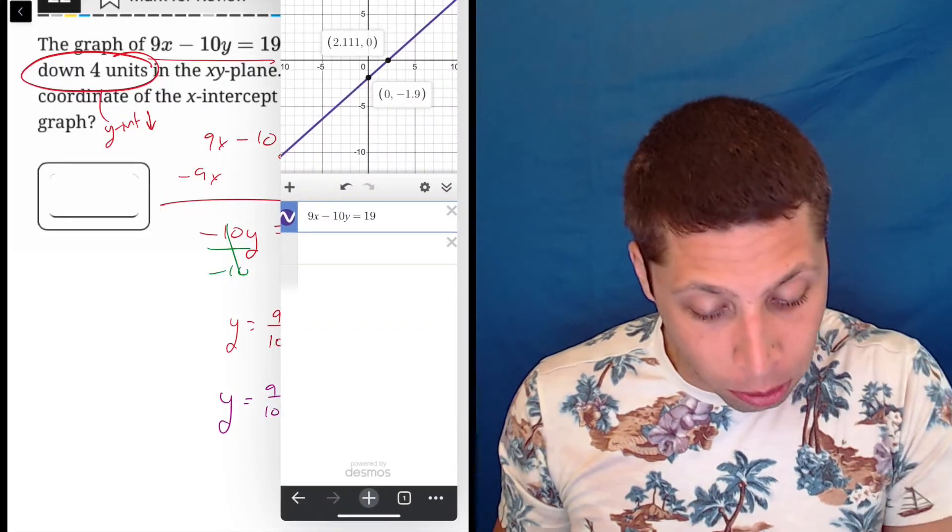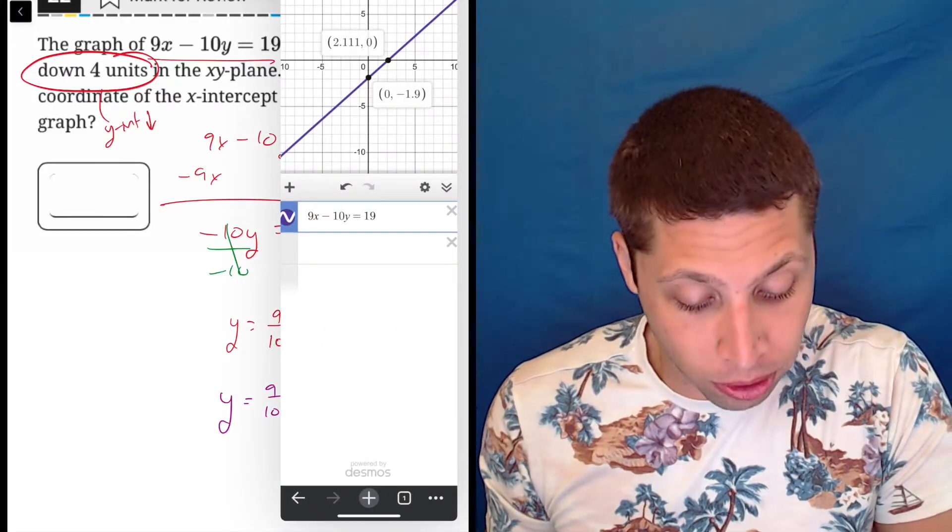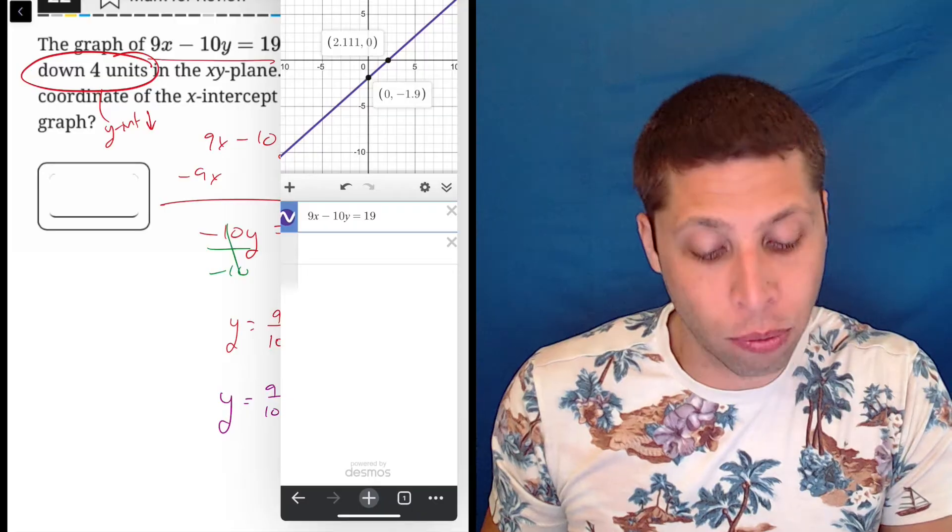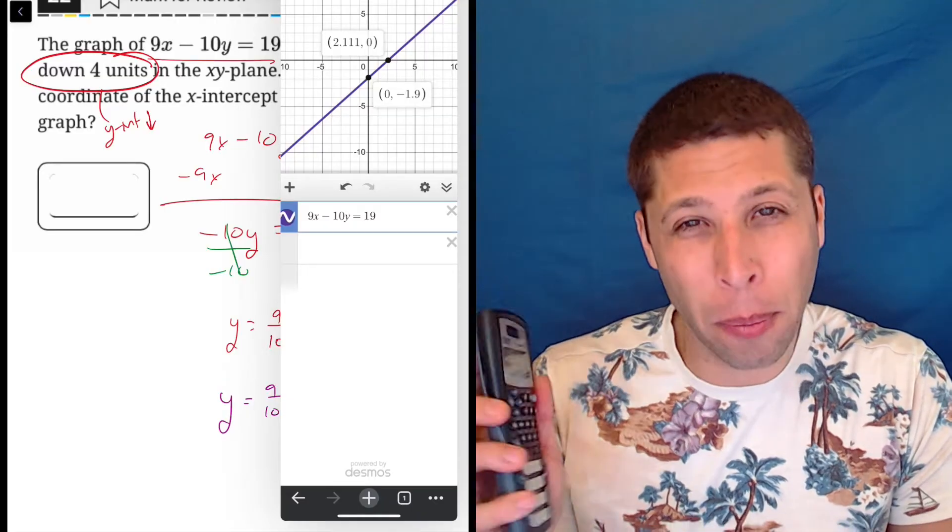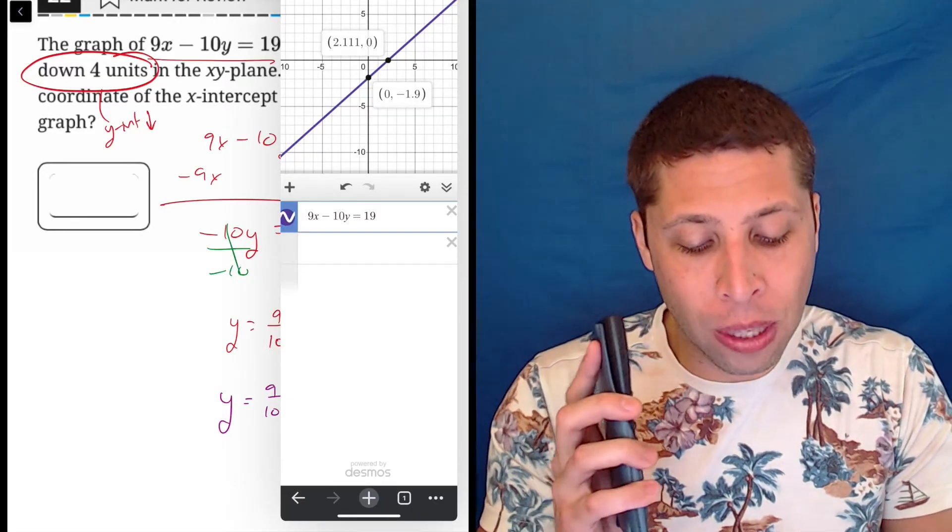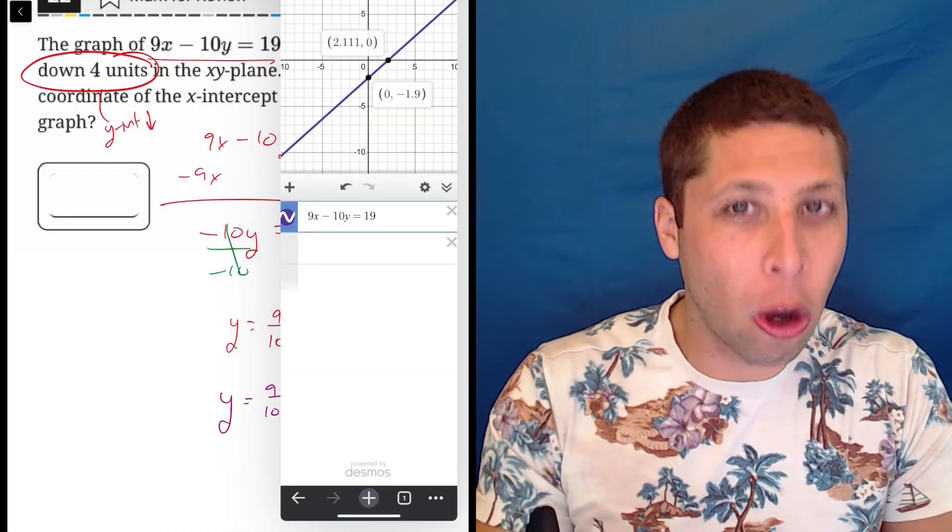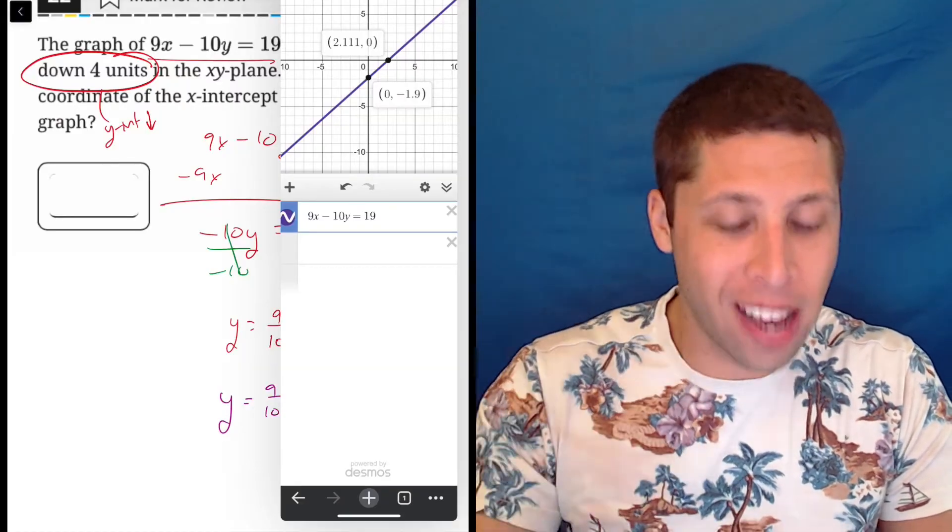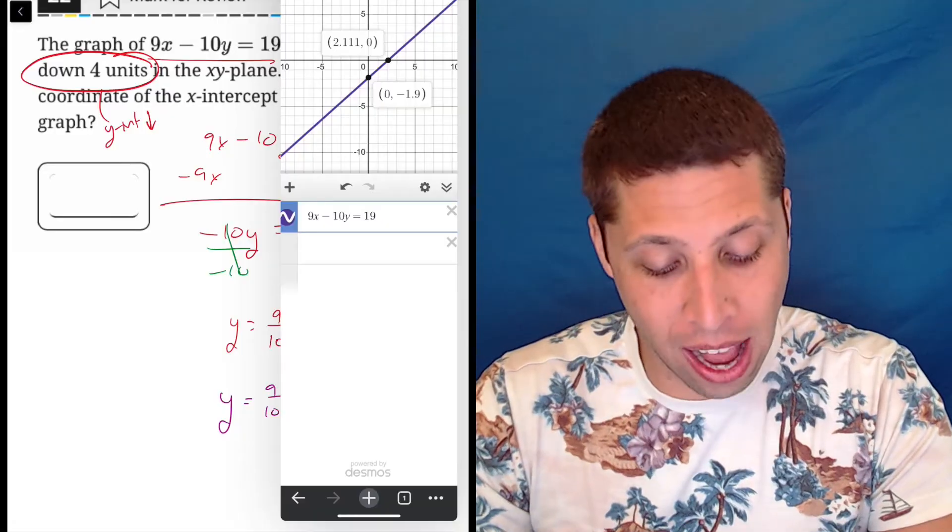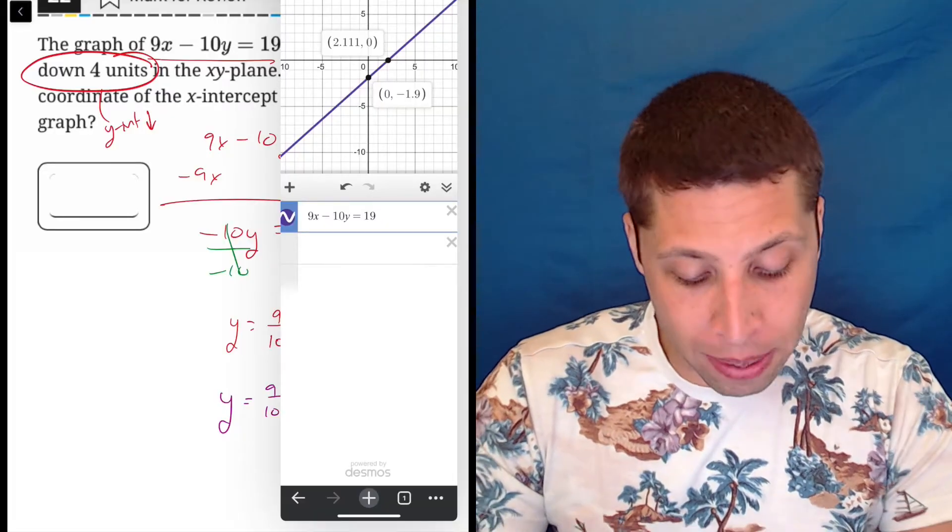And I guess I could have done something similar by using the graph that I was given originally, right? This is negative 1.9. So minus 4 would be negative 5.9. The problem, though, is it's very hard for me to know the slope of the graph when I graph it because it's not a nice number. 9 tenths is not nice. So that makes it difficult.